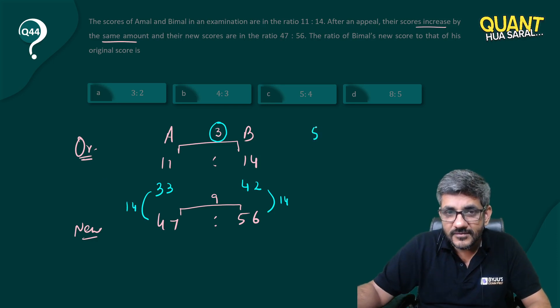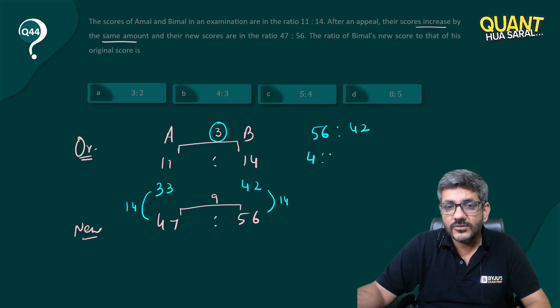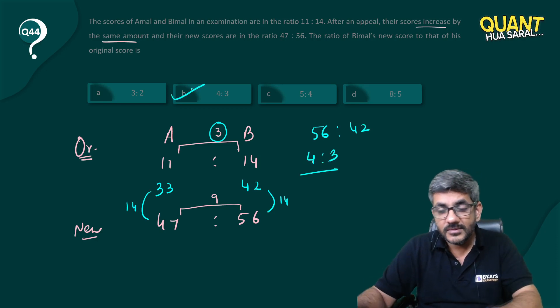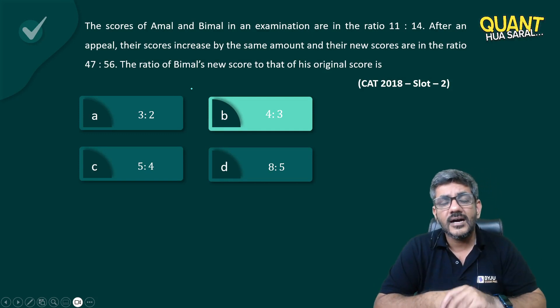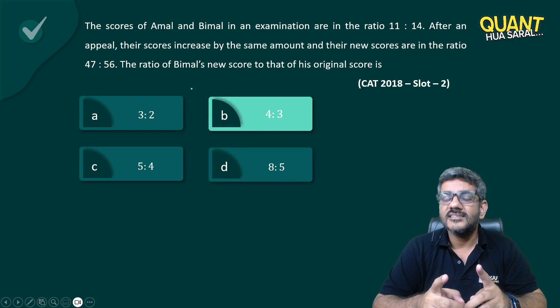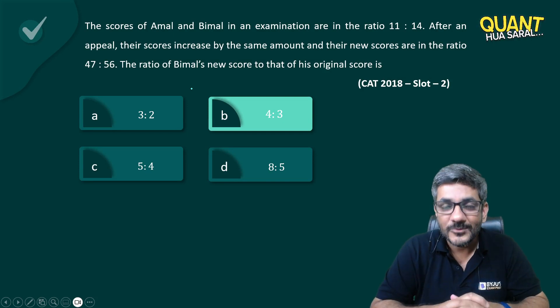And the ratio is 4 is to 3. That's it, our job is done. Answer is option B. Such an easy question. There are many such easy questions that CAT asks every time. The only thing that is needed is aptitude. Thank you very much.